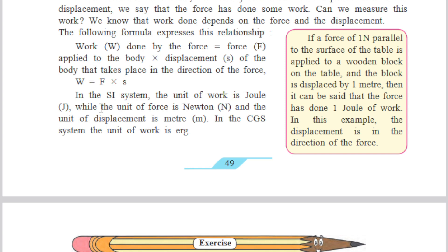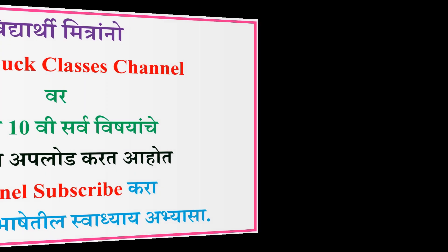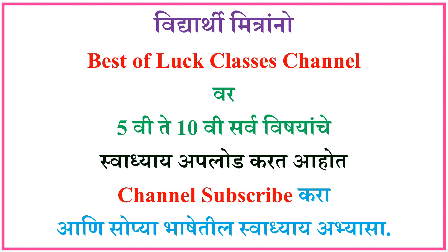In the SI system, the unit of work is Joule, the unit of force is Newton, and displacement is in meters. In the CGS system, the unit of work is ERG. If a force of 1 Newton parallel to the surface of a table is applied to a wooden block and the block is displaced by 1 meter, then the force has done 1 Joule of work. The displacement is in the direction of force. Thank you.